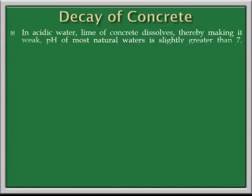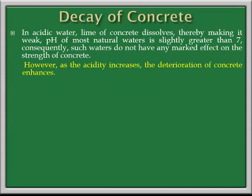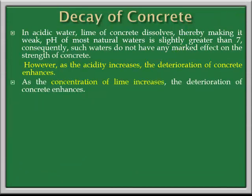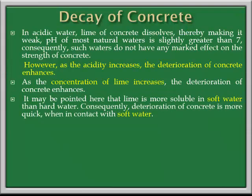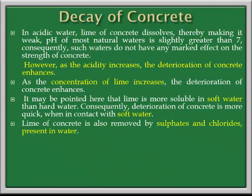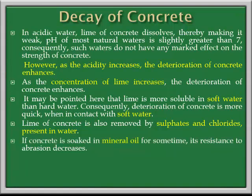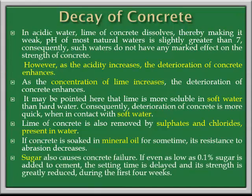Let's see the decay of concrete. In acidic water, the lime in concrete dissolves, thereby making it weak; pH is the important factor. Generally, water pH is around 7 or slightly greater, so such water does not have any marked effect on the strength of concrete. However, as acidity increases, the deterioration of concrete also increases. Second, as the concentration of lime increases, deterioration enhances. Third, lime is more soluble in soft water than hard water, so deterioration of concrete is faster in soft water. Fourth, lime of concrete is also removed by sulphates and chlorides present in water, thus decreasing the strength. Fifth, if concrete is soaked in mineral oil for some time, its resistance to abrasion decreases. Finally, sugar also causes concrete failure — if even as low as 0.1% sugar is added to cement, the setting time is delayed and its strength is greatly reduced during the first 4 weeks.